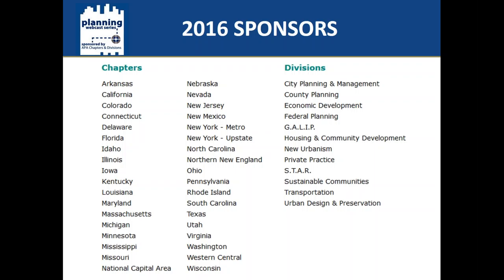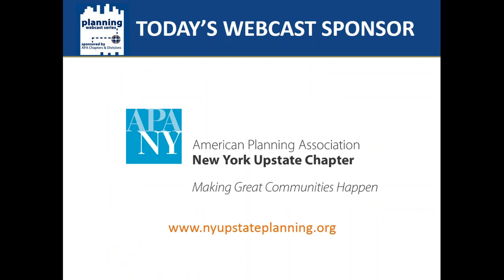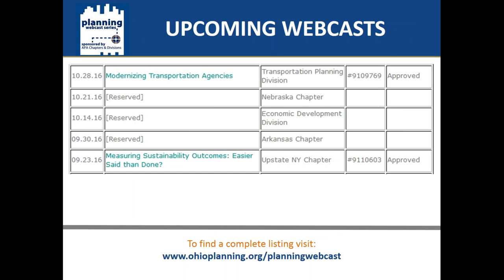On your screen is a list of the current sponsoring chapters and divisions. I want to take a moment to thank them all for making these webcasts possible. Today's webcast is brought to us by the New York Upstate chapter of the American Planning Association. Here's a list of upcoming webinars available on the OhioPlanning.org slash planning webcast web page, which is our official site. Thanks to APA's Ohio chapter for hosting that and for doing so much of the back office support for this series.